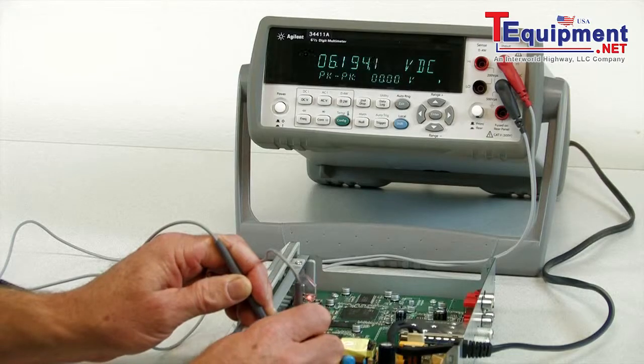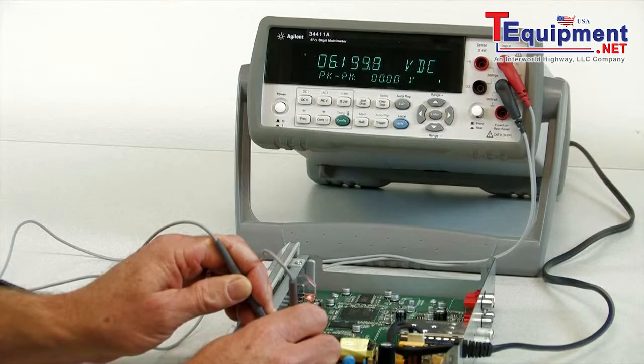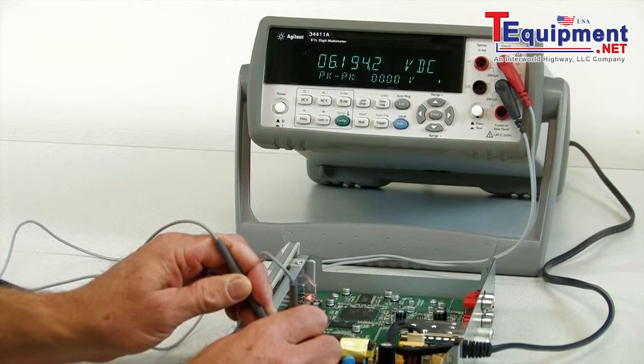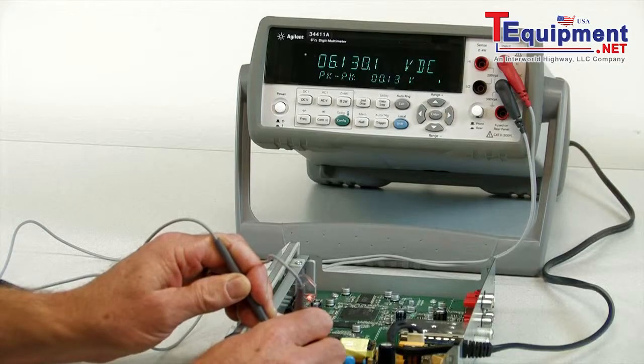We'll move on to the 5V supply. Once again, it's reading quite high. It's approximately 6.2V on the DC display, and again, it's not very noisy, as we'd expect.